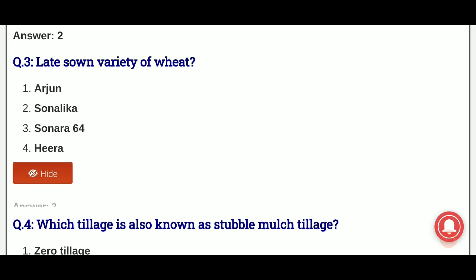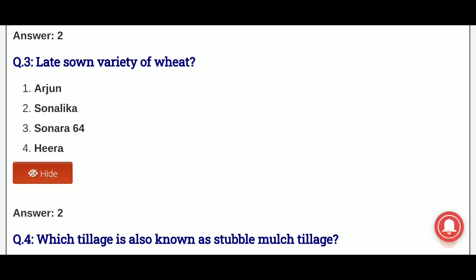And the answer is option 2, that is Sonalika is the late sown variety of wheat.